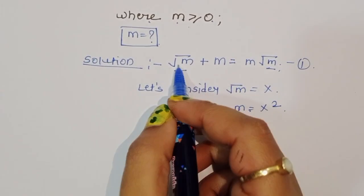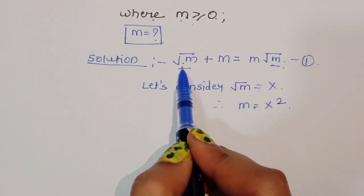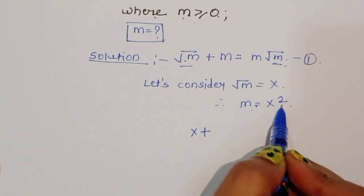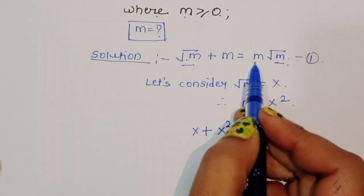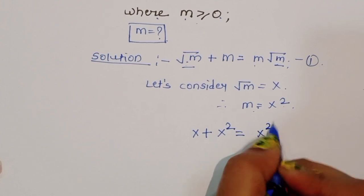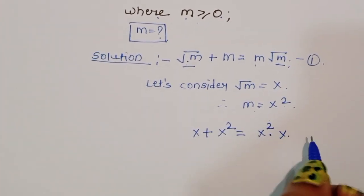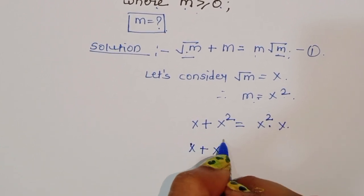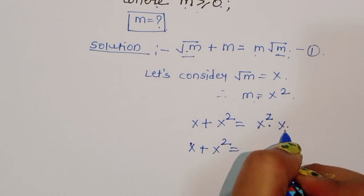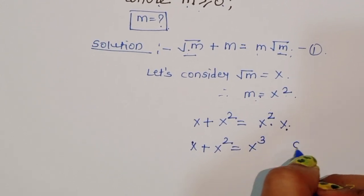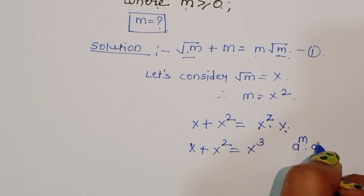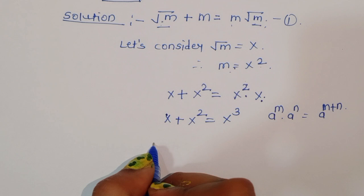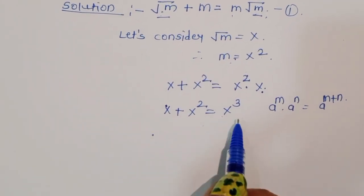According to equation 1, we can write square root of m as x, and m as x squared. So the equation becomes: x plus x squared is equal to x squared times x. Using the formula a^m times a^n equals a^(m+n), this simplifies to x plus x squared is equal to x cubed.